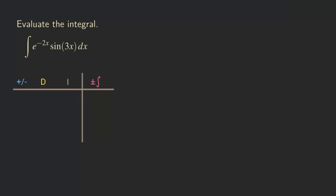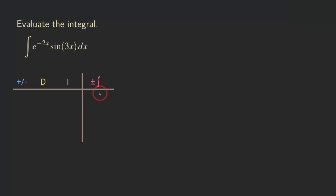We are going to set up a table because I'm using the tabular method. The table has four columns. The first column is the sign column, the second is the differentiation column — that's the u column. The third is the integration column — that's the dv column. And then there is the note column, which is for keeping track of what the integral of v du is. This column is important because it tells us when we can stop when doing integration by parts.